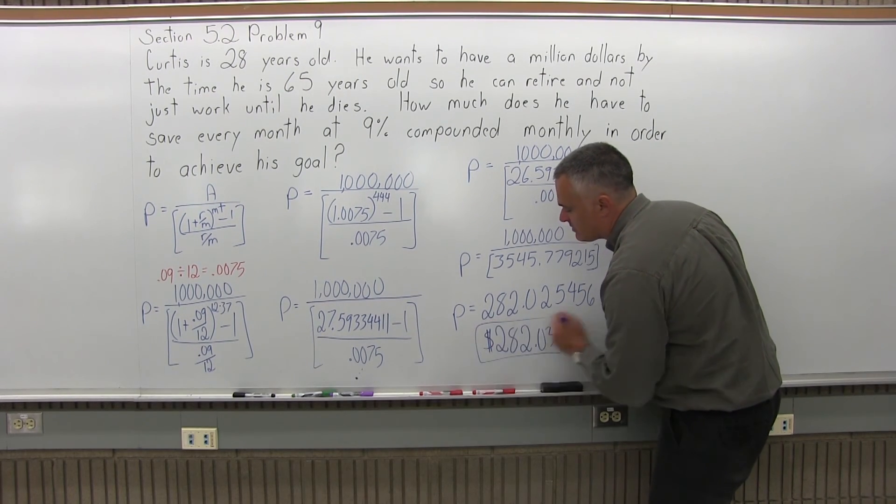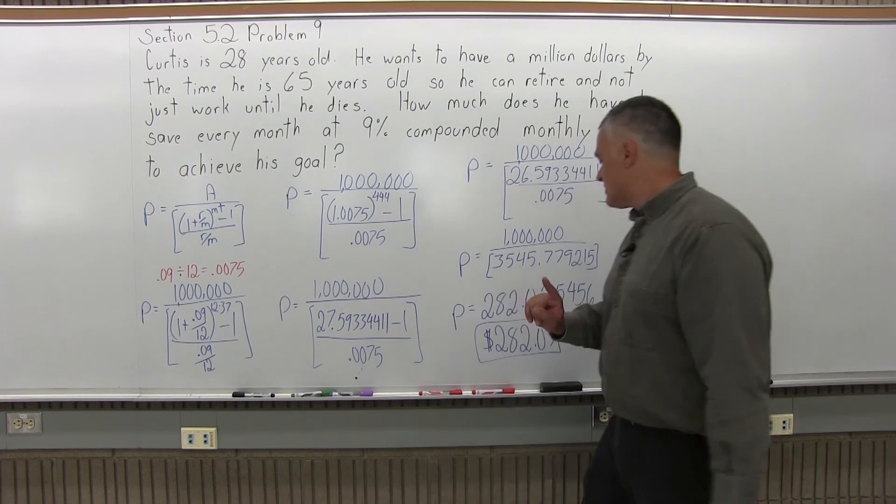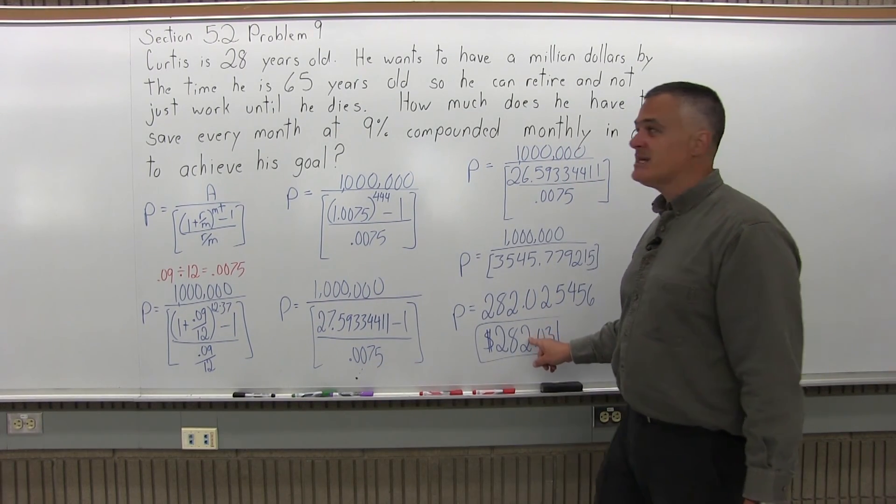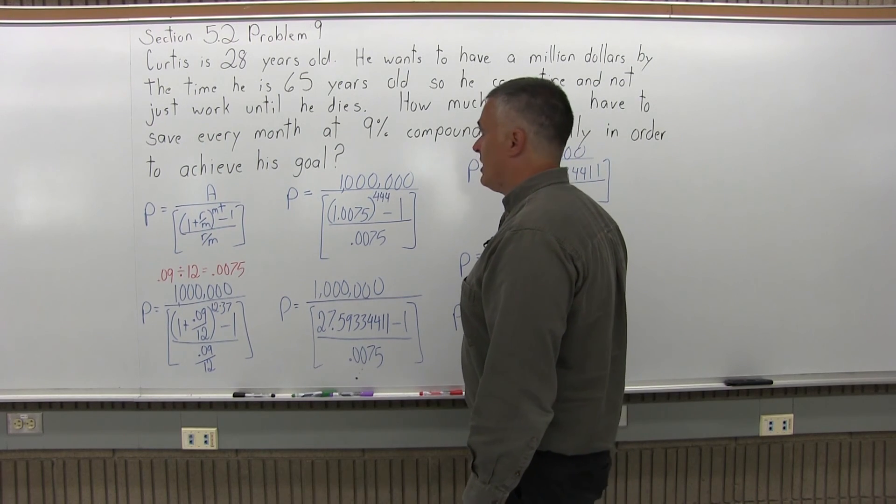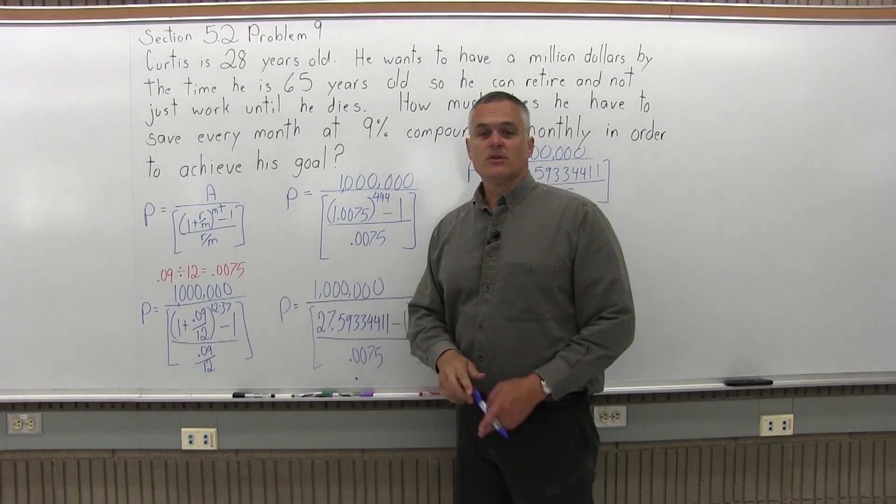So, that means the person in the problem, who I happen to name Curtis, he's 28 years old now. If he saves $282.03 every month at 9% compounded monthly, by the time he's 65, he'll have a million dollars.